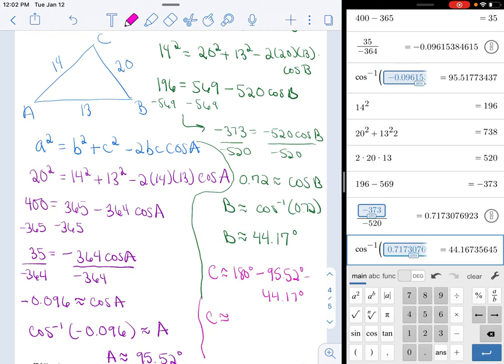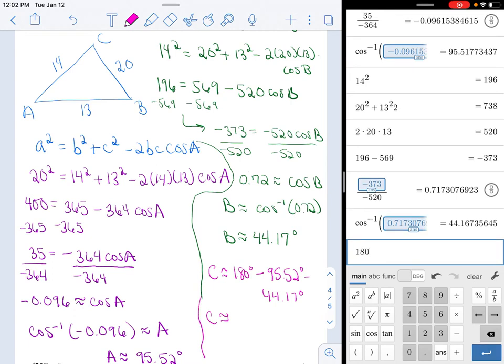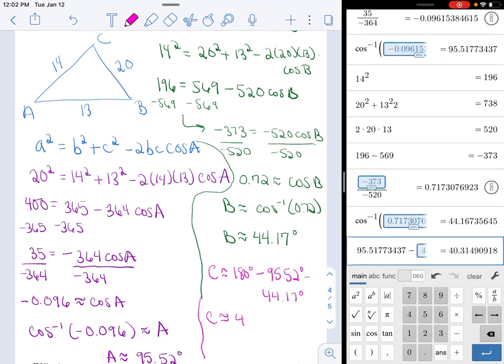So in order for this to not be terribly off, I'm going to do 180 take away. Now if I go up here, you see how I highlighted that? I'm going to put in that entire thing. I just really want to get you into good habits, especially if you're going into engineering. Accuracy is terribly important. And then I can just put answer here, which is nice. So I get 40.31 degrees.